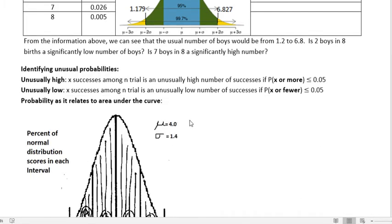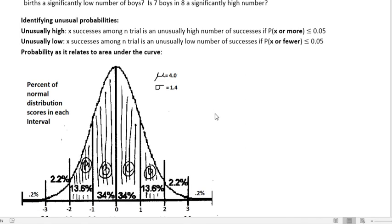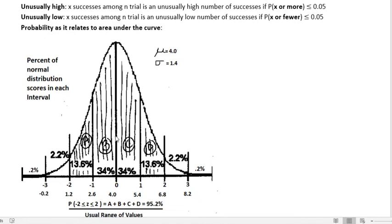When identifying unusual and usual probabilities, I was referring to that 5% threshold because 95% is usual. Anything less than 5% of the time is considered unusual. Notice we have X is more or X is fewer—we're always talking about a range, not a single value when asking those questions. Probability relates to area. The area under the curve has a total of one. Probability goes from 0 to 1.